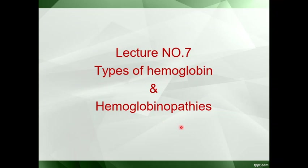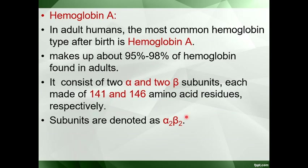Types of Hemoglobin and Hemoglobinopathies. In adult humans, the most common hemoglobin type after birth is hemoglobin A. It makes up 95-98% of hemoglobin in adults. It consists of two alpha chains and two beta chains, with subunits denoted as alpha2 and beta2.